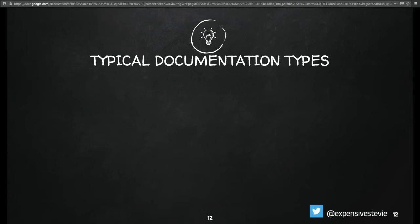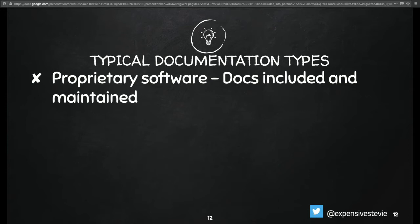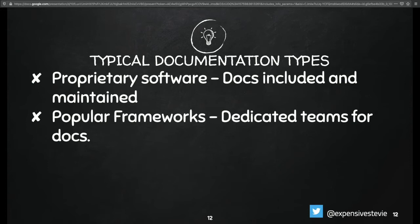Let's look at typical documentation types. Proprietary software has docs included and they are maintained — usually these come with a lot of enterprise products and they have ideally a dedicated documentation team. Popular frameworks like Vue.js, Angular also have documentation teams — there's always a group of people who focus specifically on making sure that the documentation can actually be used by others.